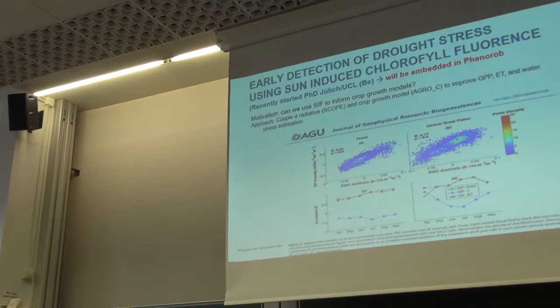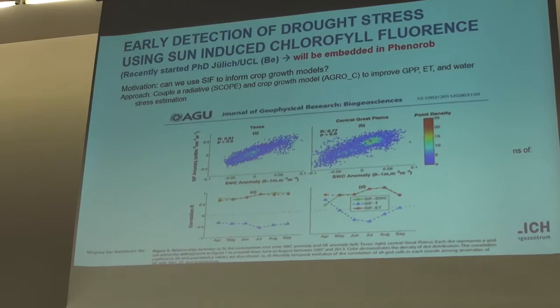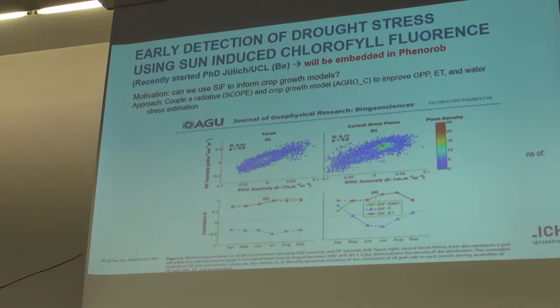There is ongoing PhD work at Jülich together with Université Catholique de Louvain on early detection of drought stress using sun-induced chlorophyll fluorescence. The suggestion is to embed this work into FinaROP.